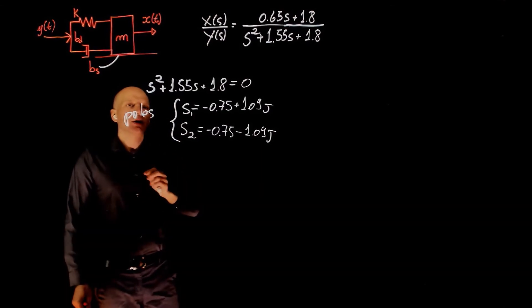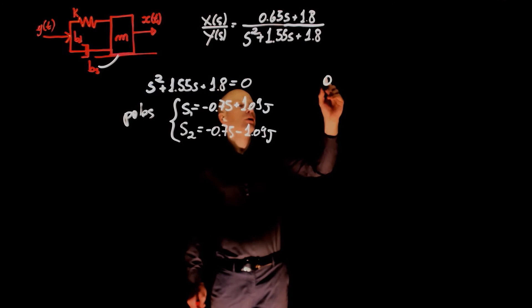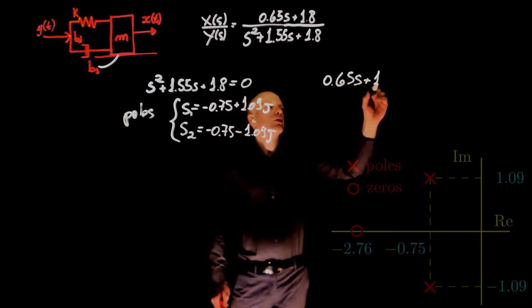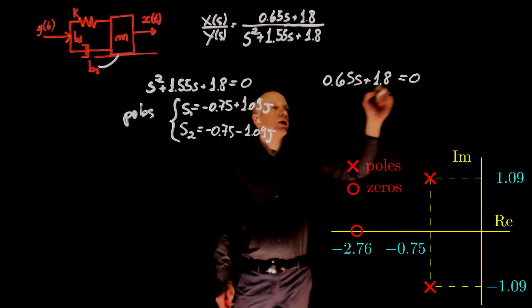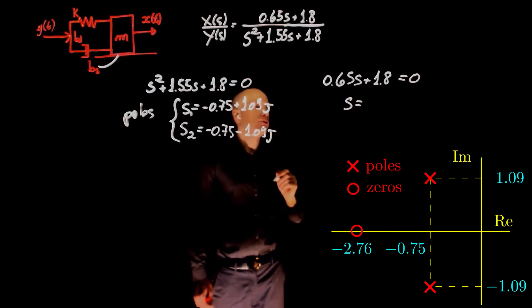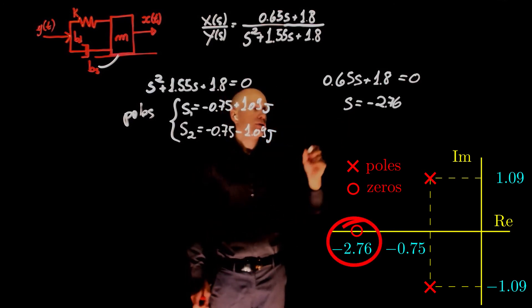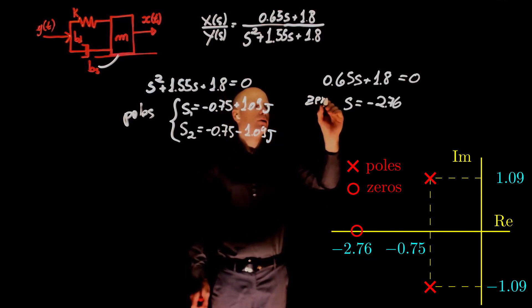The zeros are the values of s that make the numerator 0. By doing 0.67 s plus 1.8 equals 0 and solving for s, we find the 0 of this transfer function, which is negative 2.76. And this is the 0.